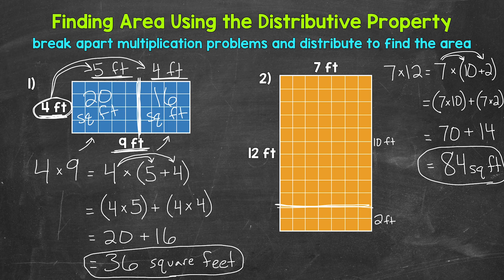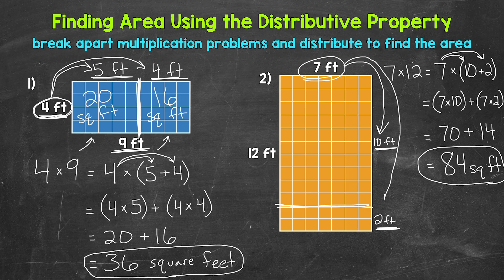To recap: we broke apart 12 feet into 10 feet and 2 feet. We then took this side length, 7 feet, and used the distributive property. So we did 7 feet times 10 feet and 7 feet times 2 feet. 7 feet times 10 feet gave us an area of 70 square feet, and 7 feet times 2 feet gave us an area of 14 square feet. Then 70 square feet plus 14 square feet gave us that total area of 84 square feet.